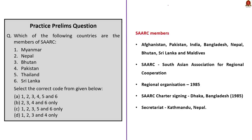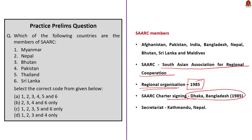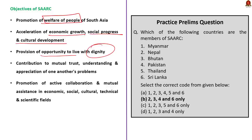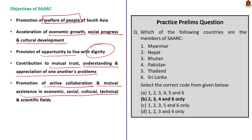SAARC stands for South Asian Association for Regional Cooperation. It came into existence in 1985 after the signing of the SAARC Charter by member countries in Dhaka, Bangladesh. The secretariat is located in Kathmandu, Nepal. Objectives include promoting the welfare and quality of life of peoples of South Asia, accelerating economic growth, social progress and cultural development, and promoting active collaboration in economic, social, cultural, technical and scientific fields.